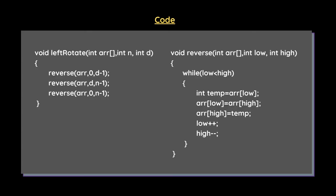Looking at the code, the function void leftRotate takes an array, n as the size of the array, and the parameter d. Inside this function, we simply call the reverse function 3 times. The first call passes 0 and d-1 to reverse the first d elements — if there are 3 elements the index goes from 0 to 2, so d-1 equals 2, and all elements from 0 to 2 are reversed.